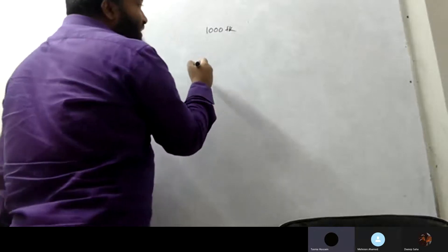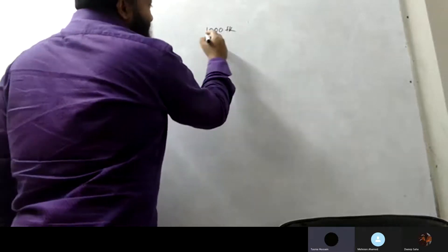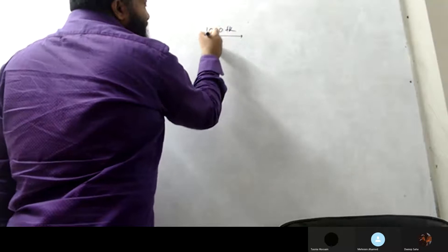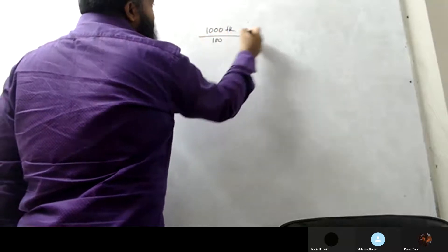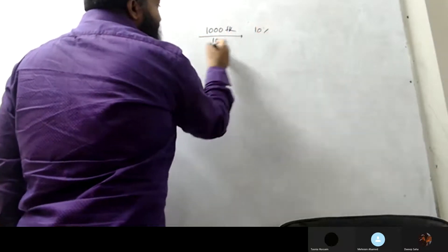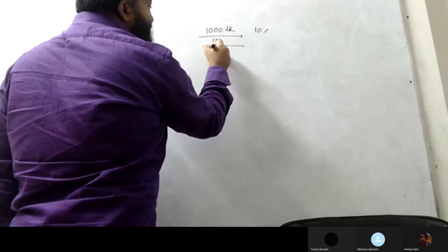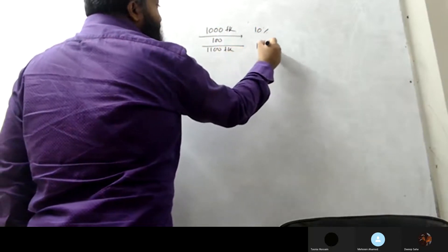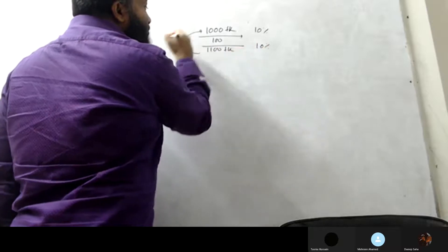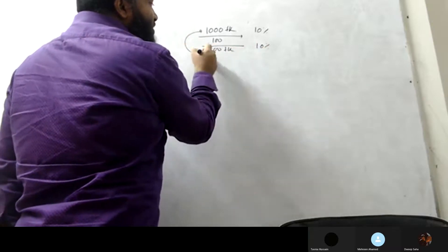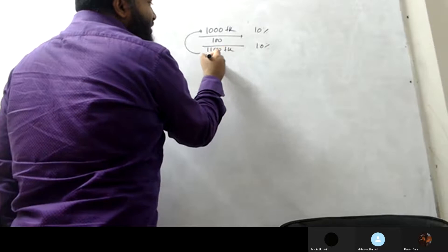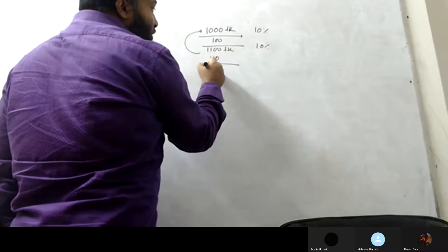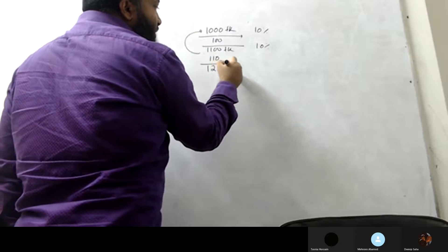If you have 1,000 dollars with a 10% interest rate, after the first month your principal becomes $1,100. Then in the second month, 10% of $1,100 is calculated. So your total amount after the second period is $1,210.